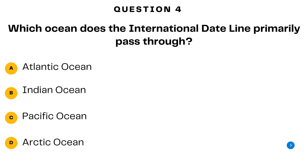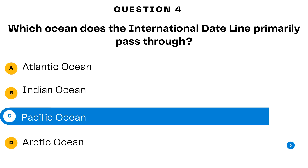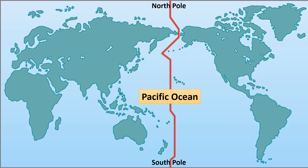Question number four. Which ocean does the international dateline primarily pass through? A. Atlantic Ocean. B. Indian Ocean. C. Pacific Ocean. Or D. Arctic Ocean. The answer is C — the Pacific Ocean. The Pacific Ocean was chosen for the international dateline because it is the largest and least populated ocean. Placing the line here minimizes disruption to the majority of the world's population and reduces the number of inhabited landmasses that need to deal with the complexity of date changes.